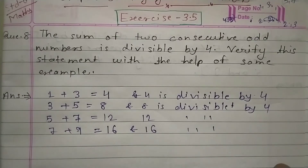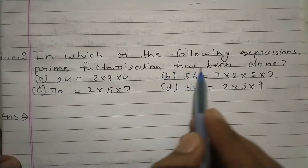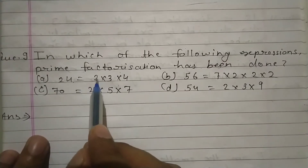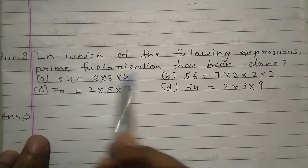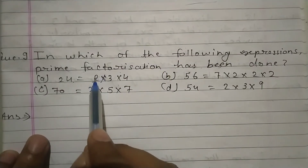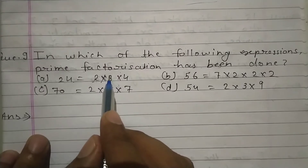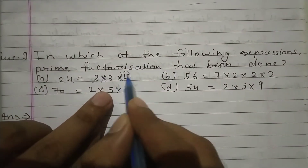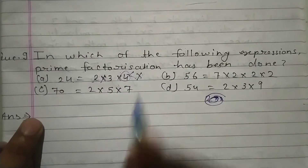Now question number nine: in which of the following expressions has prime factorization been done? You need to identify which expression has complete prime factorization. When you write factors as a product, all of them should be fully factorized — no number should remain that can be divided further. For example, 2 is a prime number. Its only factors are 1 and 2. Similarly, 3 is also a prime number. But 4 can be split as 2 × 2, so its prime factorization is not complete as a single factor.